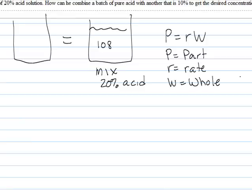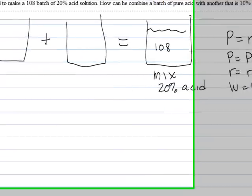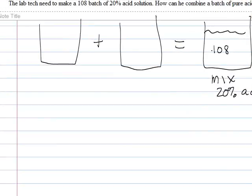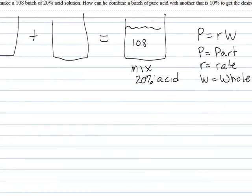Okay, so the whole amount is the amount of liquid that he has. In this case, it would be 108, where the part is how much acid he has. So if you take the amount that you have, which is 108 times 20%, that's how much acid that would be in here. So that is on that side.